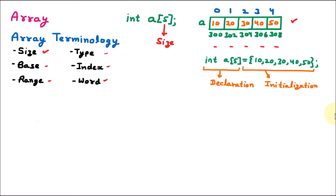The next term is type — which type of elements the array can store. Here, all elements 10, 20, 30, 40, and 50 are integers because the array was declared as int. So int is the type, meaning it is the data type of the array. Type can be integer, float, or character depending on your declaration.